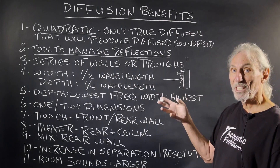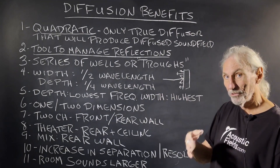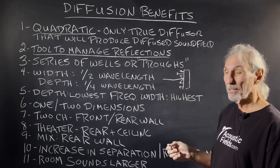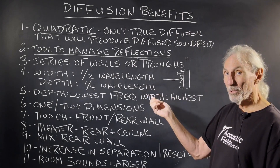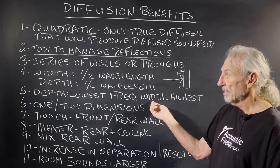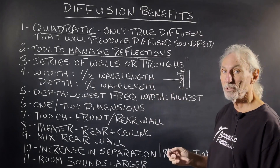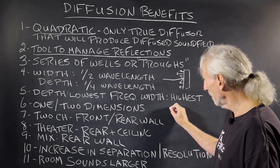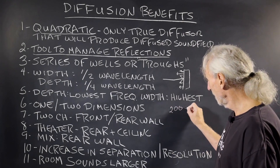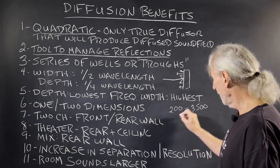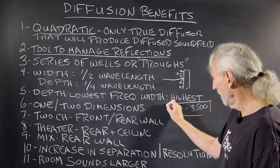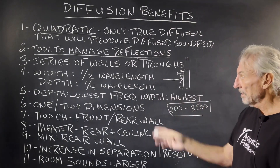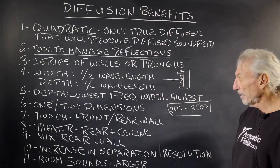The wells or troughs inside a diffuser — we've all seen them, you can go on our website and see them. The width is half wavelength and the depth is quarter wavelength, so the width determines the high end of the frequency and the depth determines the lowest, so they have frequency ranges. Most of our diffusers start at 200 cycles to about 3,500 — that's the frequency range. You can go lower, but it won't take more depth; depth is the quarter wavelength, that's the low part of the frequency.